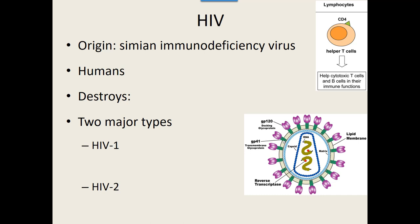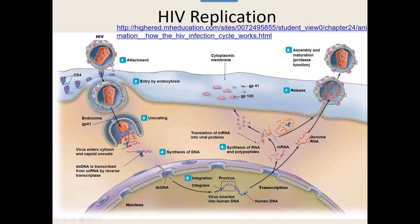We're going to pick up right here in lecture next class. To preview how the virus gets in: it uses those GP120 proteins to recognize and attach to the CD4 white blood cells. The whole thing — envelope and all — gets inside, but it only needs the genetic information, so it gets rid of the envelope and the capsid, leaving just the single-stranded RNA. That's where reverse transcription takes over and starts to make DNA out in the cytoplasm of our cells. Once you have double-stranded DNA, it goes where our DNA is inside the nucleus and becomes part of our cell's DNA.